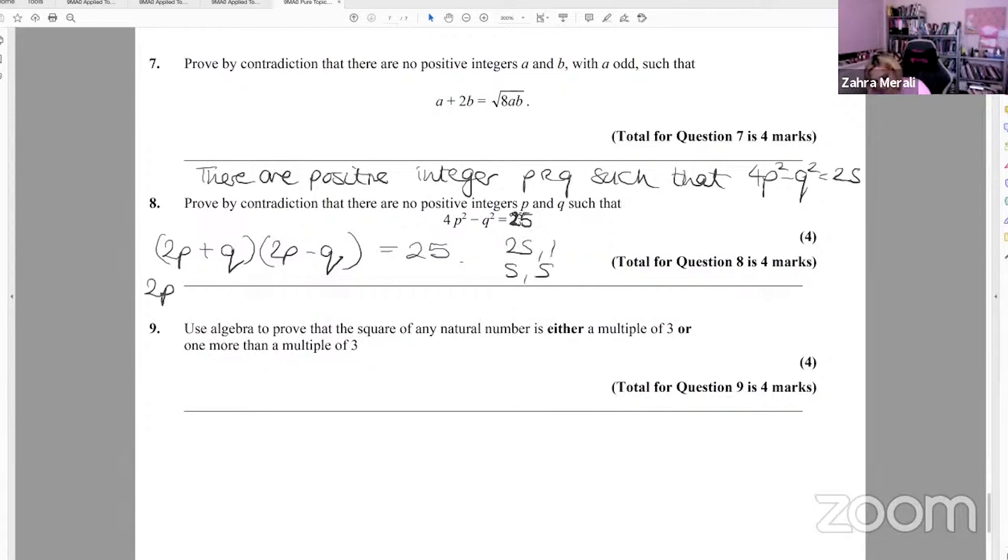So we could say 2p plus q equals 25, 2p minus q equals 1. And when you solve that p and q, you get p is 6.5 and q is 12. Or you say 2p plus q equals 5, 2p minus q equals 5. And you end up with p equals 2.5 and q equals 0. And you'd say in both these cases, both p and q are not positive integers. So whole numbers. Therefore, this is a contradiction.